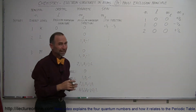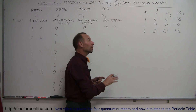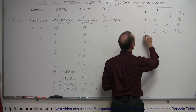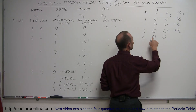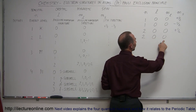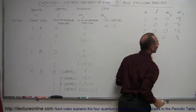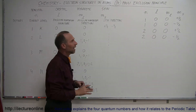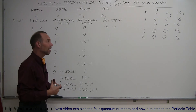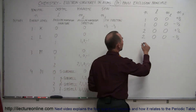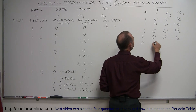That is the s orbital in the second energy level. There is room for a second electron, but that electron has to have a different set of quantum numbers. It could have the first three quantum numbers the same — second energy level, s subshell, s orbital — but with a minus one-half spin direction. Now we have the second s orbital filled up, and the next electron would have to have different quantum numbers.